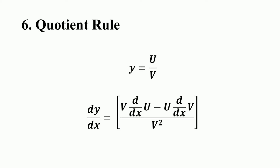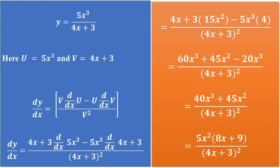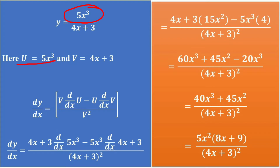We will consider some examples so that you will be more clear about this rule. Consider the following function: y = 5x³ divided by (4x + 3). Here we have two functions — the first function in the numerator is 5x³, and the denominator, the second function, is 4x + 3.